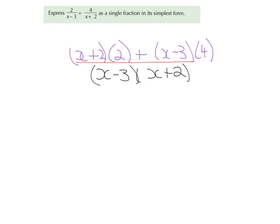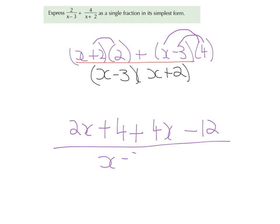We can see here that we have one bracket multiplied by another bracket. The best thing to do here is to take our time. So it's x times two, which gives me two x, and two times two, which gives me four. So it's two x plus four, plus x by four, which gives me four x, and minus three times four, which gives me minus twelve. That is all over x minus three, bracket x plus two.